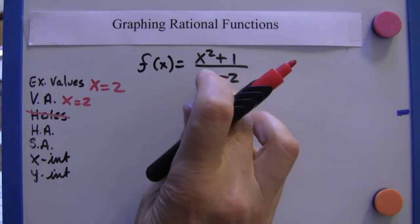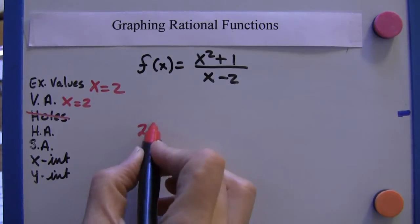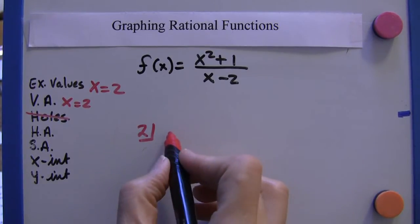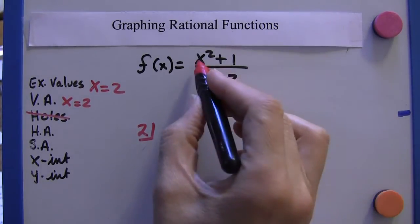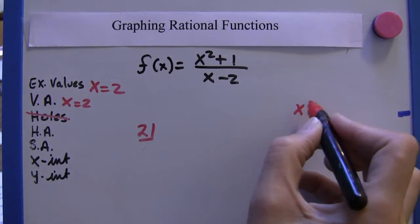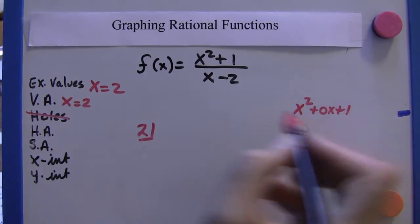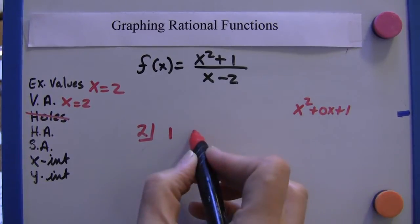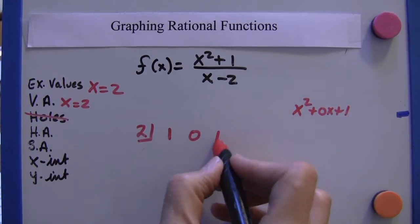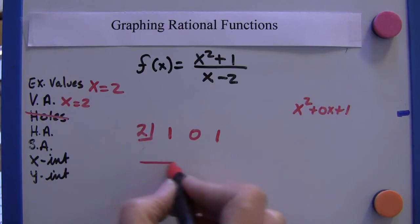We're going to take two, put it in a half box there. And this, with the placeholders, would be x squared plus zero x plus one. So I'm going to put a one here, a zero here, and a one here. Skip a line, draw a line.